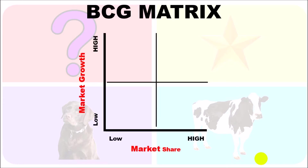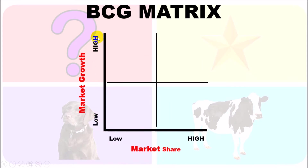What you do is take a graph where along the x-axis you have the market share and along the y-axis you have the market growth. This is divided into four quadrants: low market share/low market growth, low market share/high market growth, high market share/low market growth, and high market share/high market growth.